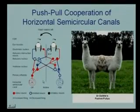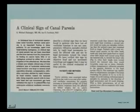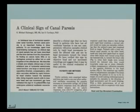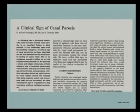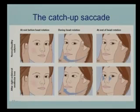With reciprocal inhibition and the clinical sign of canal paresis, measurement of impulsive testing depends on understanding these principles. This was the first time we described the clinical sign which is the corrective saccade, and that was 22 years ago. Things have happened since then. Let's go over the principles of the catch-up saccade.